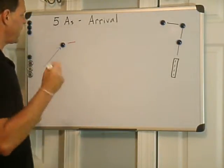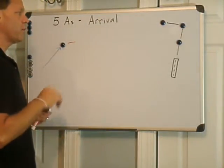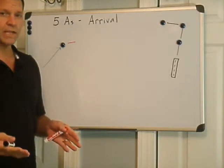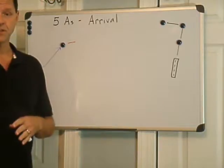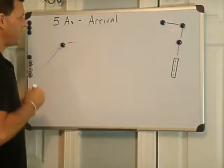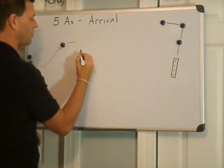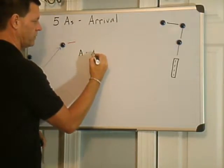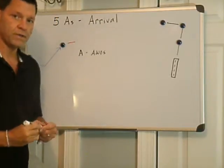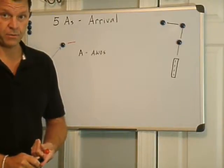The first A, after I cross my arrival transition point, is I'm going to tune in to the AWOS at the Dare County Airport. If you're going to a tower field, it would be the ATIS, or maybe an ASOS at another field, or sometimes you might get the weather from air traffic control. But the first A, essentially, is getting the automated weather. And what are we going to get on the AWOS? We're going to get winds, we're going to get ceiling, we're going to get visibility, and we're going to get the altimeter setting.